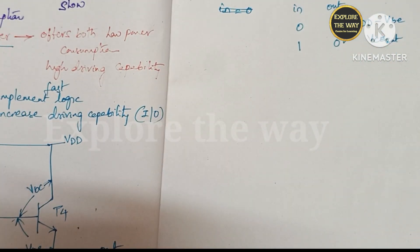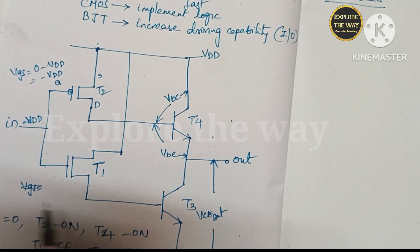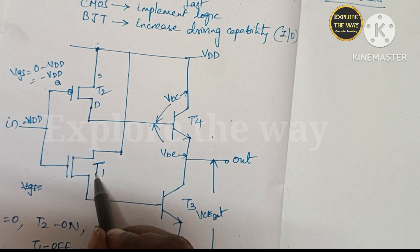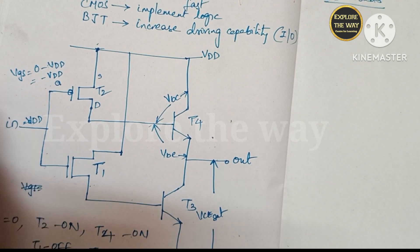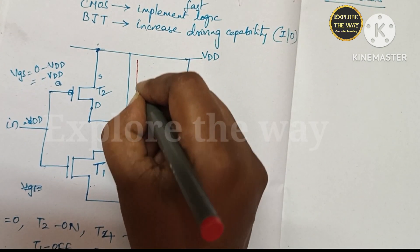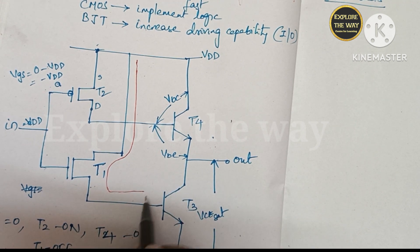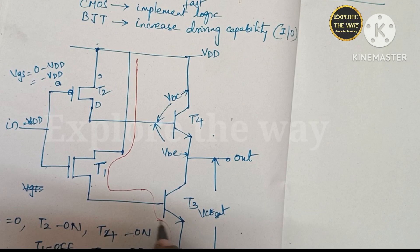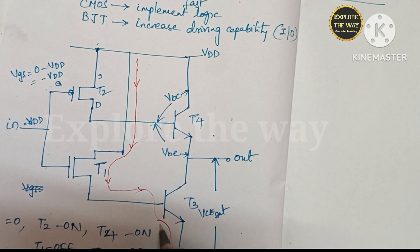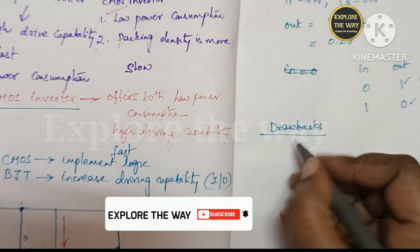What are the drawbacks? Coming to the diagram, when the input is VDD, the transistor T1 will turn on, thereby T3 will turn on. So there is a low resistance path from VDD through T1 through this T3 to the ground. So this is the low resistance path from VDD to ground. That is the first drawback.